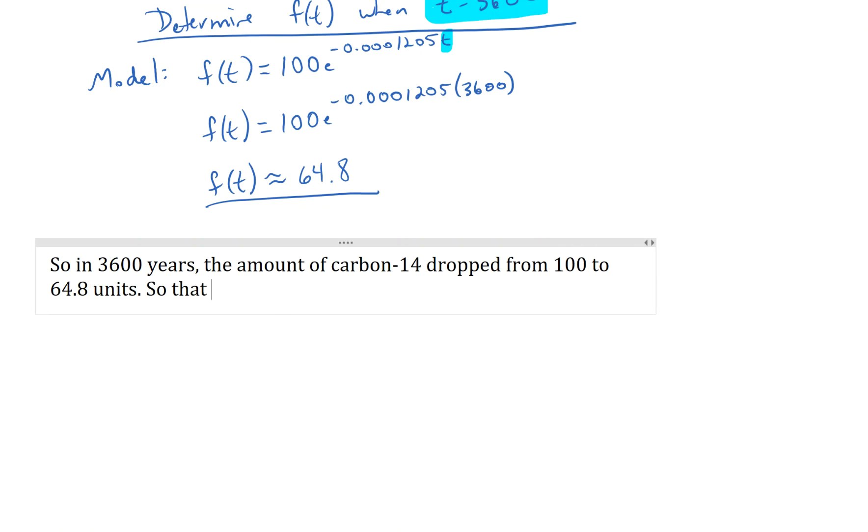And I can do this because I started with 100, so we can think of these in percentages. So what percentage of a drop is that? That is a 35.2% drop in Carbon-14. And that answer is reasonable because it takes 5750 years for 50% of the Carbon-14 to decay.